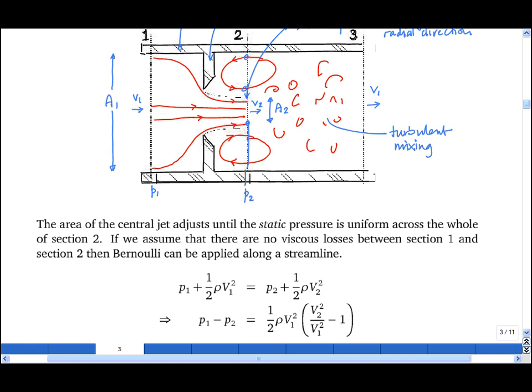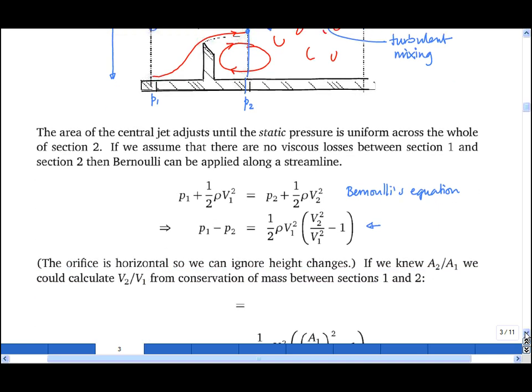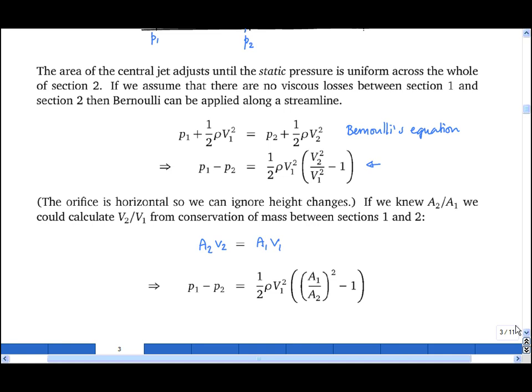If we assume that there are no viscous losses between section 1 and section 2, we can apply Bernoulli's equation between section 1 and this point on section 2. And from that we get an expression for the difference between pressure 1 and pressure 2. Now if we knew A2 and A1, we could calculate V2 over V1 from conservation of mass. As long as the density is uniform, which it is, A2V2 is equal to A1V1. And substituting that into our expression for P1 minus P2, we obtain an expression in terms of A1 over A2, and we note that this term here is a constant. It actually depends on the exact shape of the orifice.